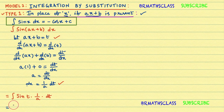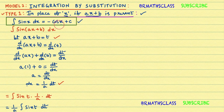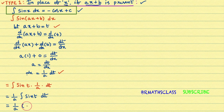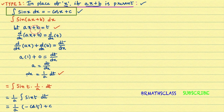Here, 1/a is a constant, so take it outside the integral: (1/a) times integral of sin(t) dt. We know the formula — integral of sin(x) dx is minus cos(x) plus c. So integral of sin(t) dt is minus cos(t) plus c. The result is (1/a) times (minus cos(t)) plus c. Now substitute back: t is ax plus b.